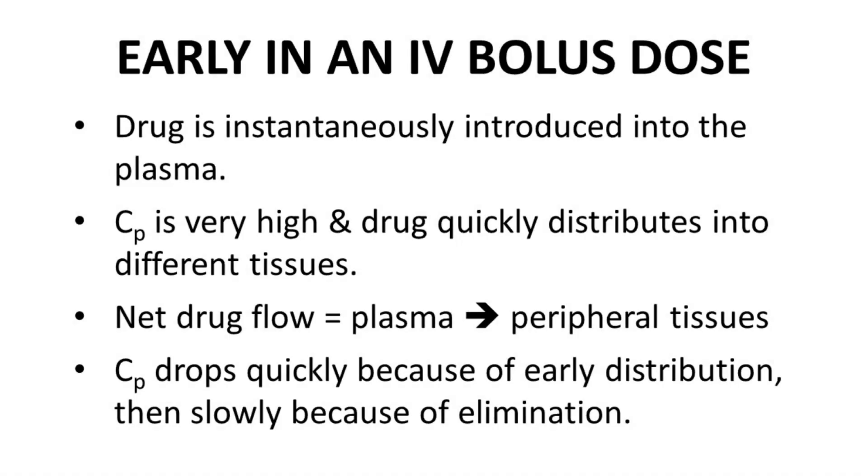At the time of an IV injection, the drug is at a very high concentration in the blood, especially the plasma fraction. The drug concentration in other tissues is low, and the drug will begin distribution from the high concentration plasma to the low concentration tissues. The net flow of drug is from the plasma into the other tissues—muscle, skin, fat, you name it.